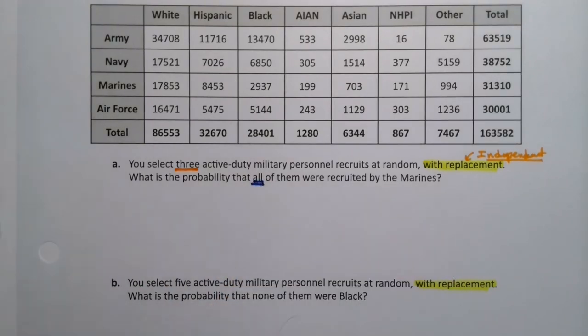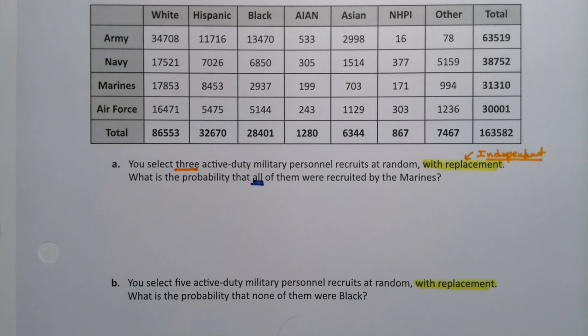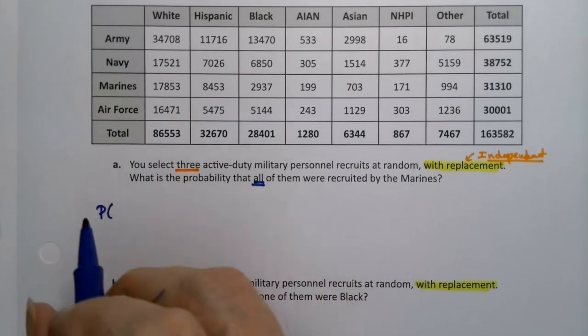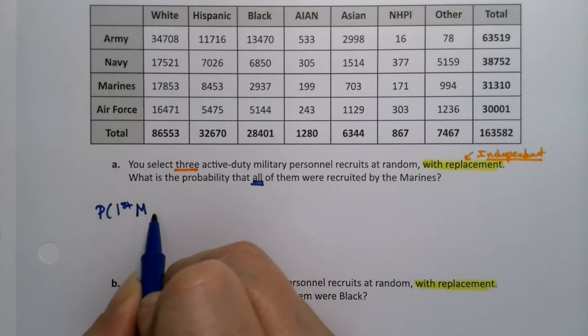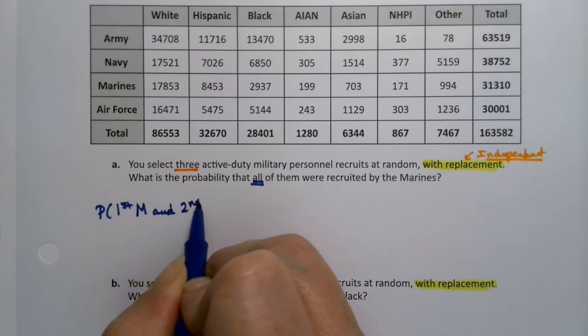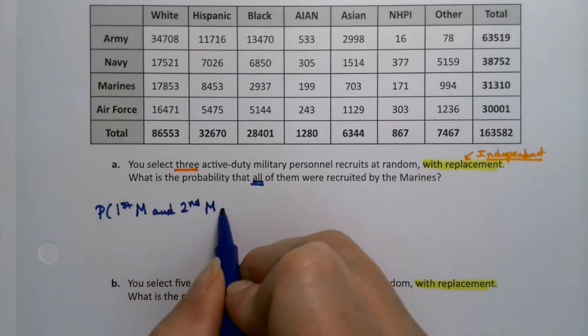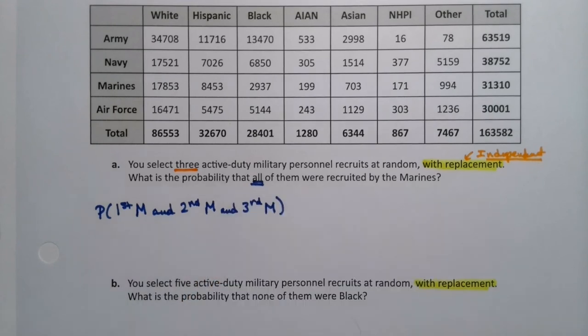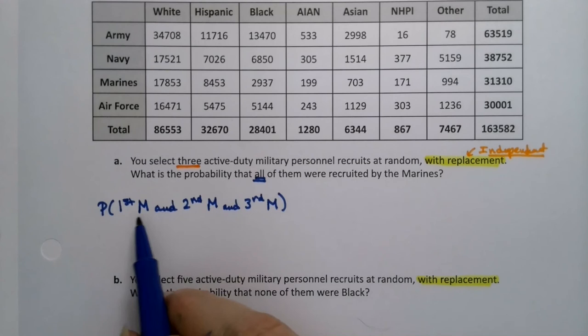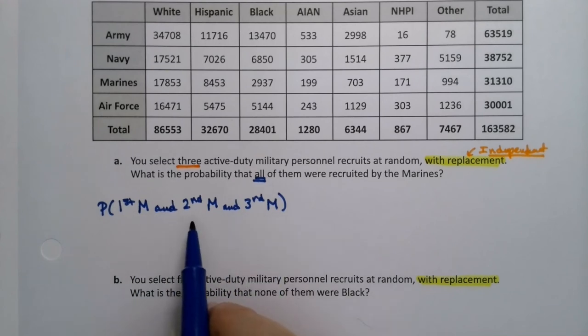All is 'and' hiding in disguise. So when you think about all, that means the first one is going to be Marine, and the second one will be Marine, and the third one will be Marine. So you're going to have all three of them be Marines.